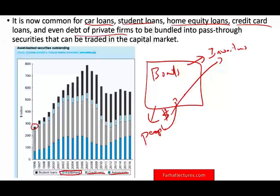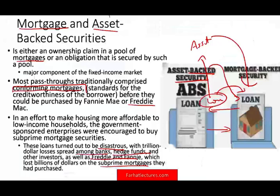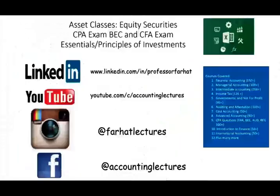Equipment loans, credit card loans, and automobile loans are all considered asset-backed securities. Regarding student loan ABS specifically, students cannot discharge student loans even in bankruptcy — that's what investors are banking on. Credit card loans, however, are generally unsecured, so calling them asset-backed securities is questionable.